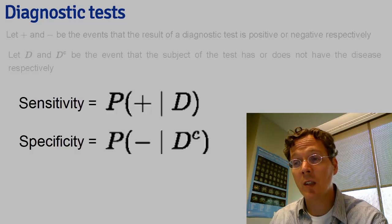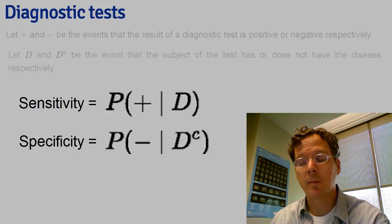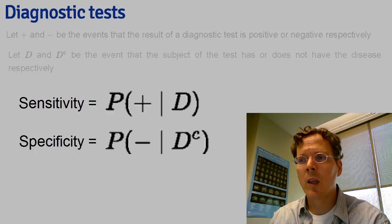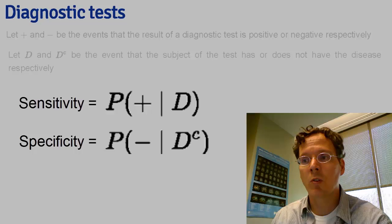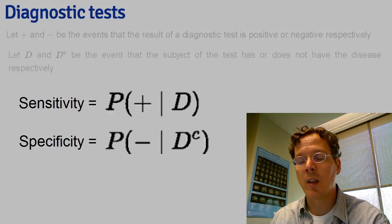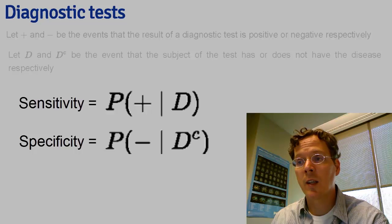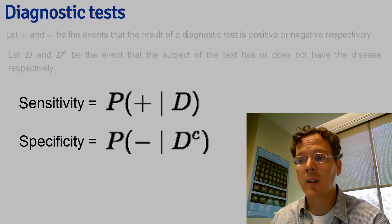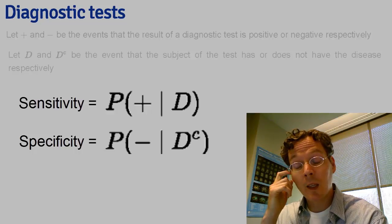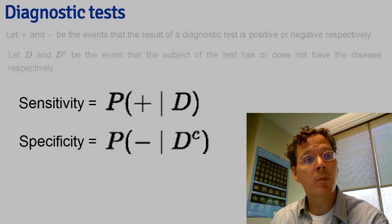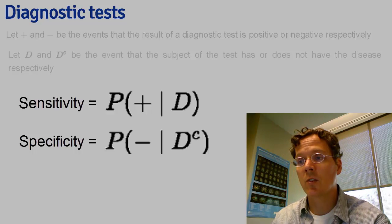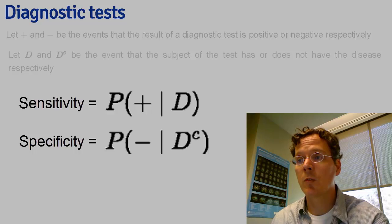You want the specificity to be high for a test to be good. In the development of diagnostic tests, these things are at least conceptually attainable, though there are difficulties in finding good sensitivity and specificity estimates. For example, in an HIV blood test, you could take people who you know to have the disease and apply the diagnostic test to that blood. You could also take people who you knew for sure did not have the disease and apply the diagnostic test to the blood samples from those subjects.